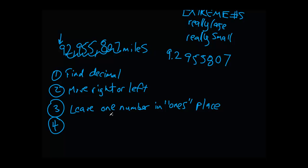For step 4, I'm going to multiply by 10 with some exponent. And the exponent is going to be places that I moved. And the exponent is also going to be positive or negative depending on if the original number was really large or really small. So, this 9.2955807 is going to be 9.2955807 times 10 to the positive 7th power since I moved seven places and it's a positive number.